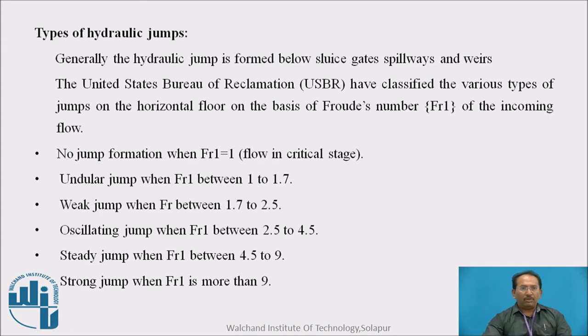Now, we will see what are the types of jumps. The types of jumps are classified on the basis of Froude's number. The United States Bureau of Reclamation, commonly called as USBR, have classified these jumps on the basis of Froude's number. That is 1 to 1.7, it is an undular jump. Froude's number 1 to 1.7. And 1.7 to 2.5, it is a weak jump. 2.5 to 4.5, it is an oscillating. 4.5 to 9, it is a steady. And above 9, it is a strong jump. This type of jump, that strong jump, we can observe on a field.